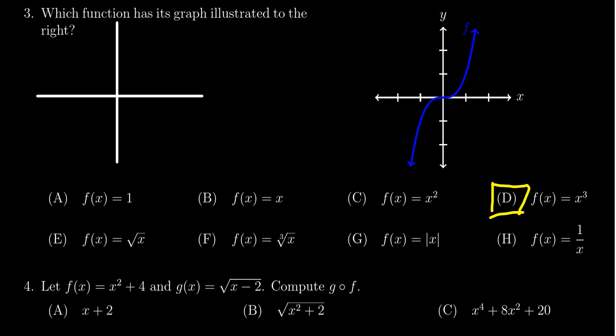Now, if you're not sure, these are just graphs that you want to memorize. So, if you go through them one by one, f of x equals one, this is a constant function. It'll look like a horizontal line.